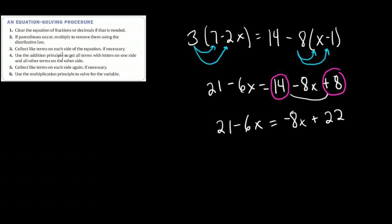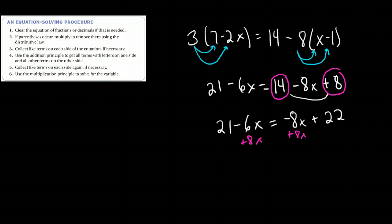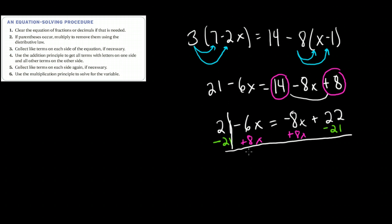Now I'm at something familiar, but I have x's on both sides. So I use the addition principle — let's move our x's to the left side and our integers to the other side. I'm going to add 8x to both sides to get my x's on one side. And I'm going to subtract 21 from both sides because that's a positive 21. Subtracting 21 gives 22 minus 21, which is positive 1. So I've used the addition principle.